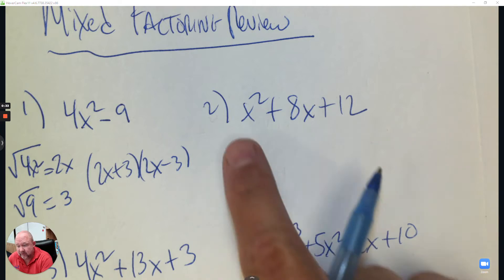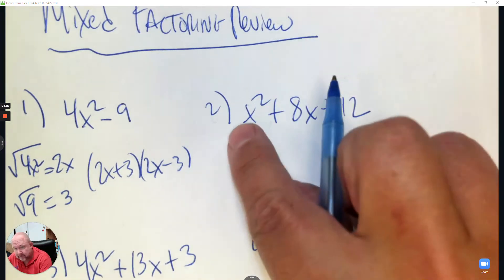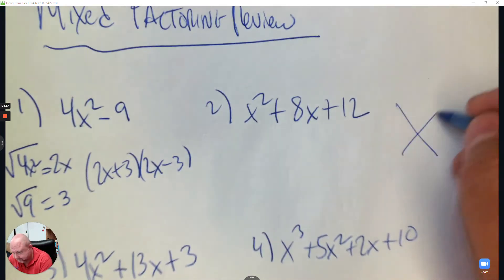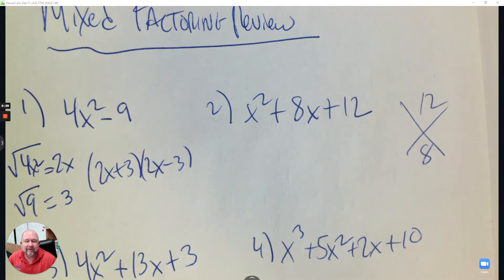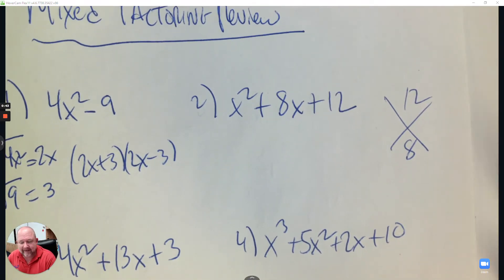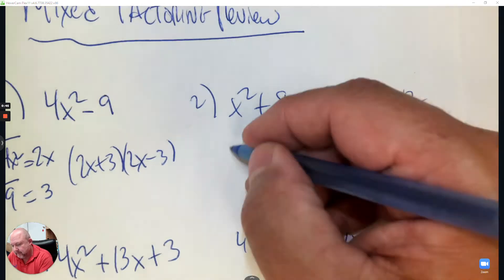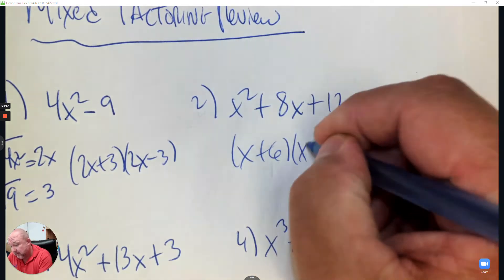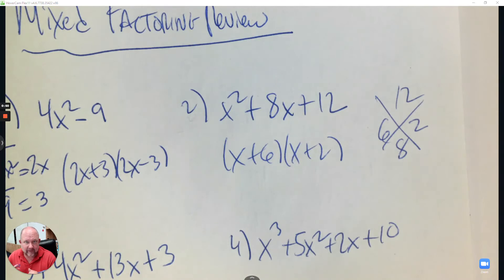Number two, what do I notice? It's a trinomial, and it's simple because the first number is a 1. So we have 12 and 8, and we're looking what two numbers multiply to 12 and the same two numbers add to 8. So find those two numbers, and that's it. Use both positive 6 and positive 2, and you factored it.